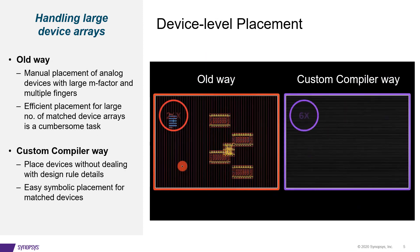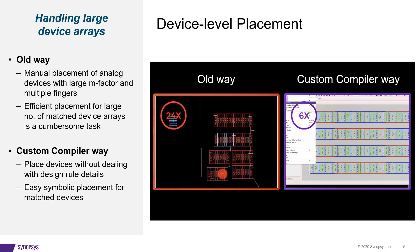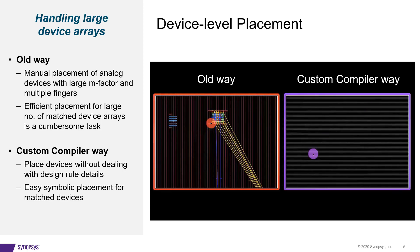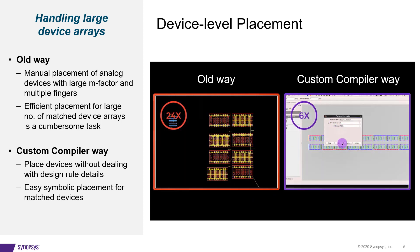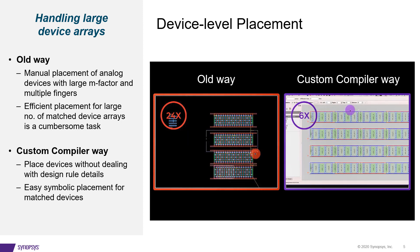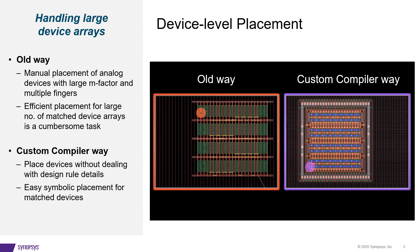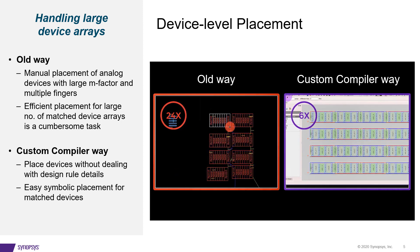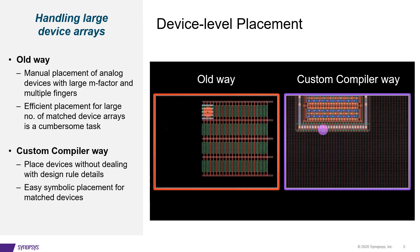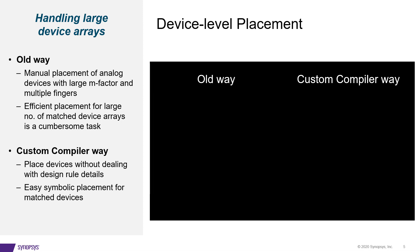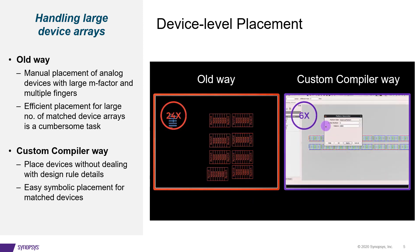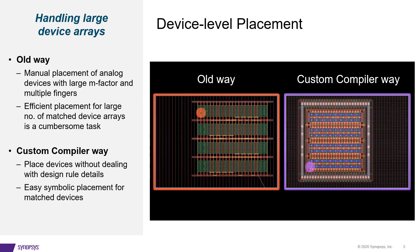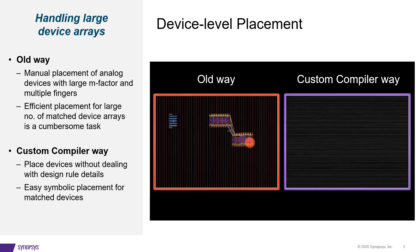The first step in analog layout implementation is device placement, which is very different from digital layout. Layout engineers need to place devices in strict matching patterns like common centroid to reduce the effect of systematic variations on silicon. Using the old-fashioned way, engineers placed these devices manually. Analog circuits usually have large M-factor devices with multiple fingers, making manual placement of these large device arrays really hard. Layout engineers spent hours picking and placing devices in matching patterns, not to mention how hard it becomes when taking care of DRC details as well.